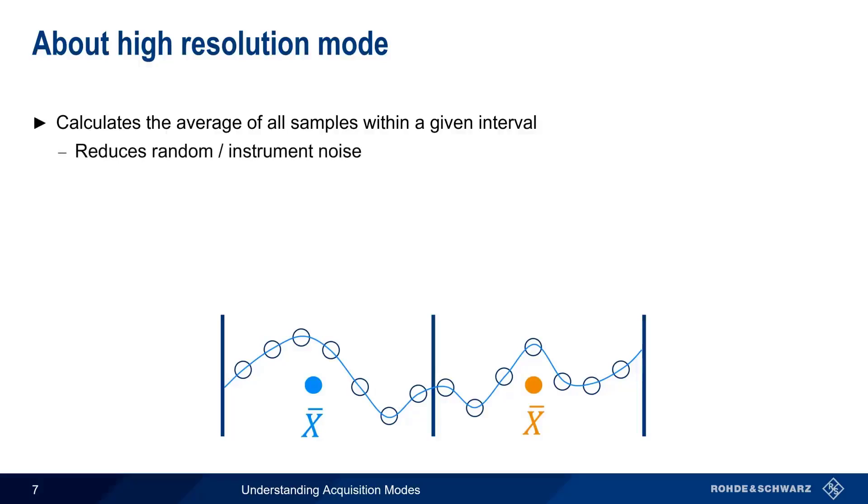Averaging the samples in this way reduces random or instrument noise, thus improving signal-to-noise ratio and vertical resolution. High-resolution mode, therefore, can often provide more detail in the displayed waveform.